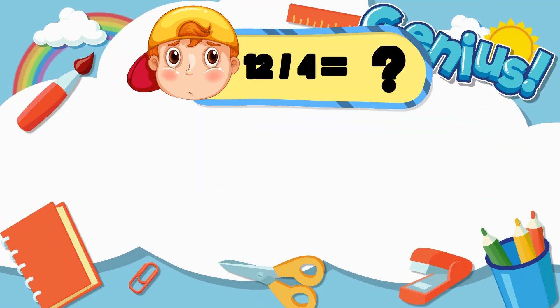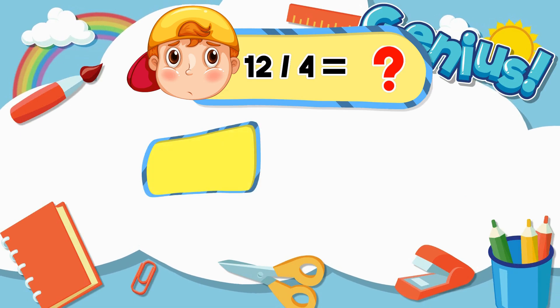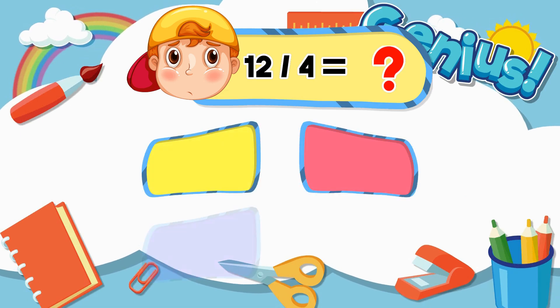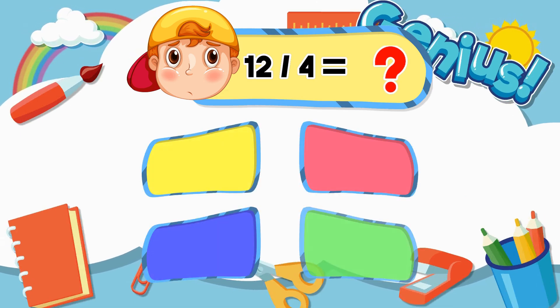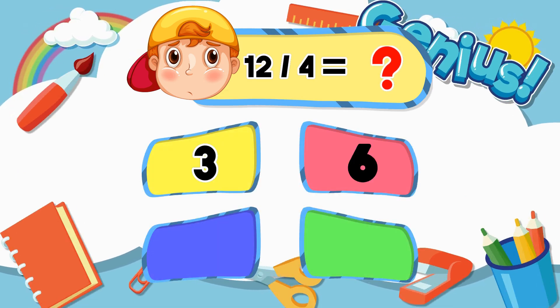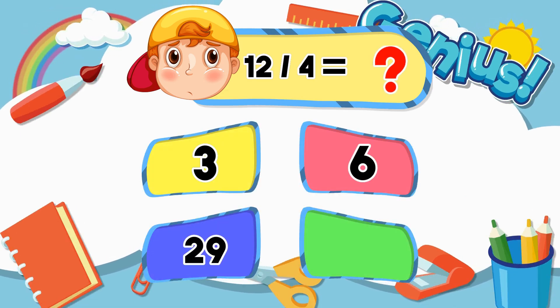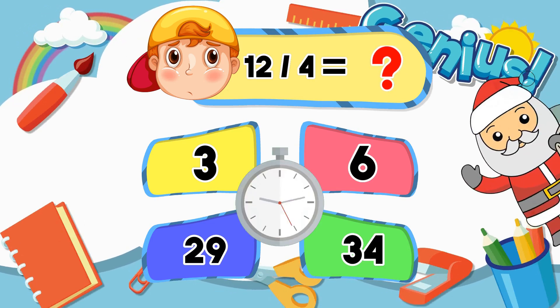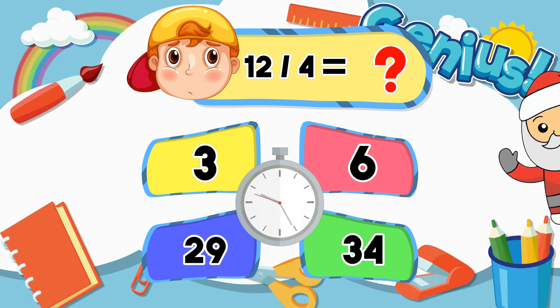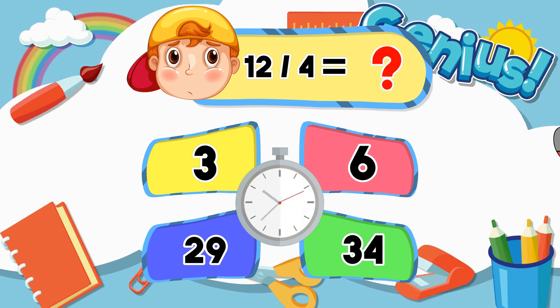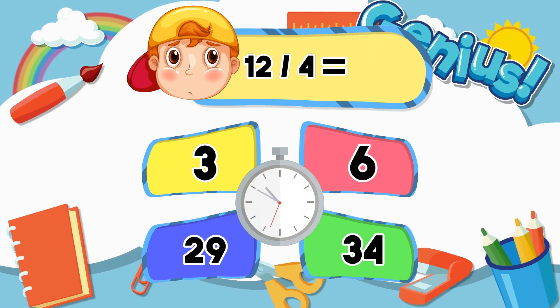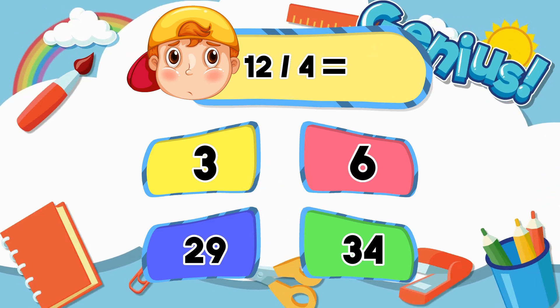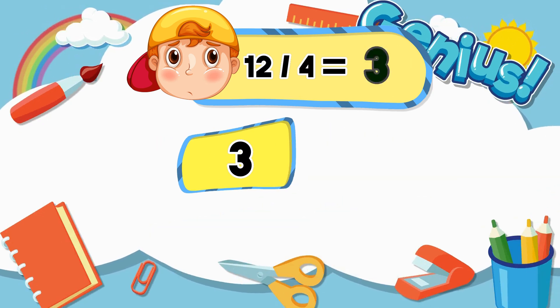What is 12 divided by 4? Options: 6, 29, 34. Answer: 3.